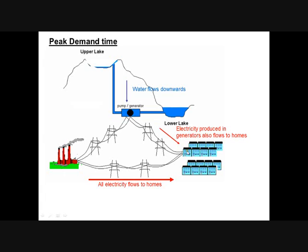Then at that crucial moment — the end of EastEnders or whatever it is — all those people go into the kitchen and turn their kettle on. All the electricity from the power station is going to homes, but then the water runs from the top lake down to the bottom lake, turns the generator, and makes extra power. This might only run for 20 minutes or so, but that's enough to get through those big spikes in demand.